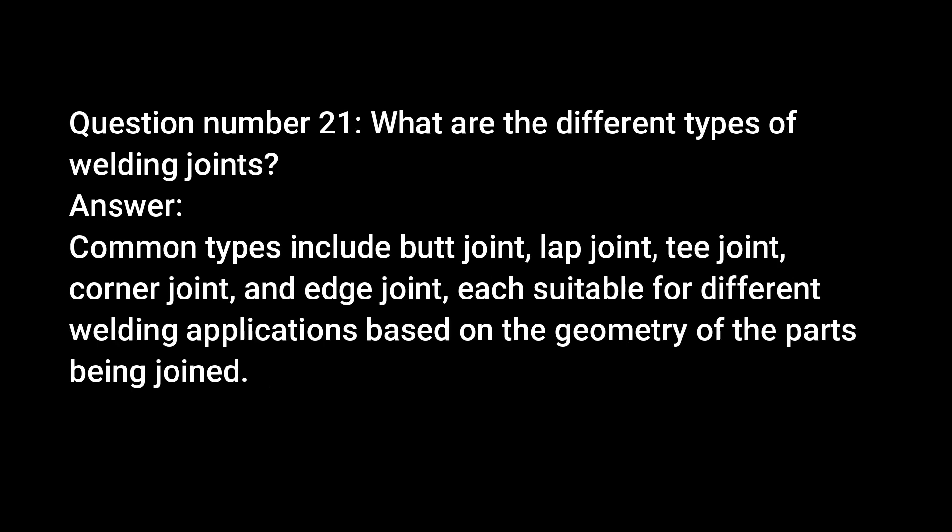Question number twenty-one: What are the different types of welding joints? Answer: Common types include butt joint, lap joint, T-joint, corner joint, and edge joint, each suitable for different welding applications based on the geometry of the parts being joined.